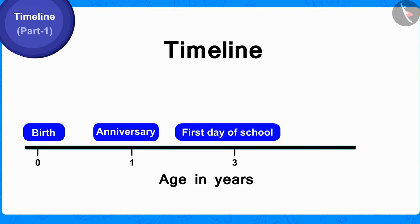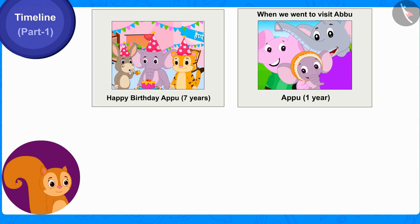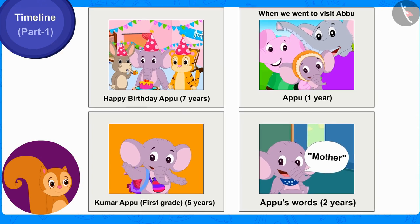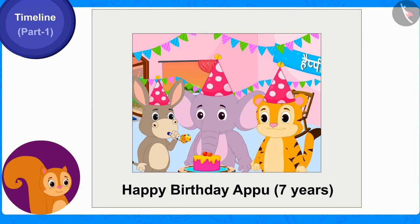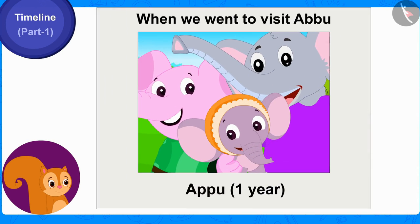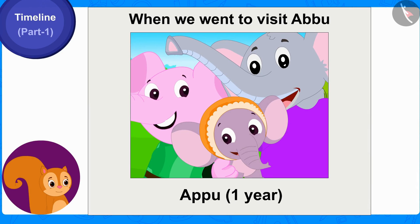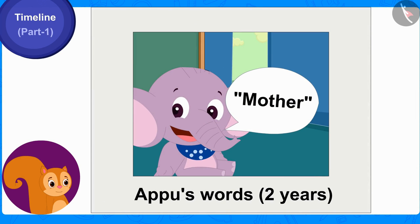Chanda removed four photos from Appu's album. In the first picture, Appu is celebrating his seventh birthday. In the second one, Appu was in first grade. The third picture was taken when Appu was one year old and his parents had taken him on a trip to Abu.